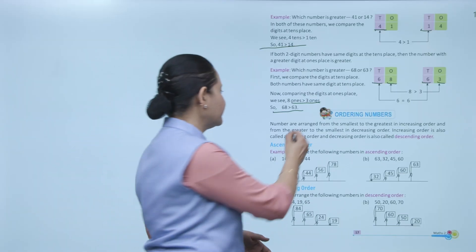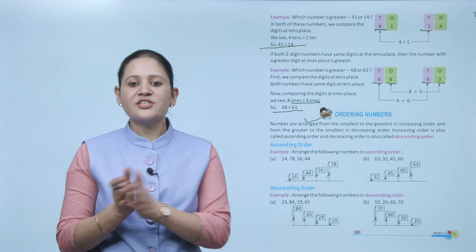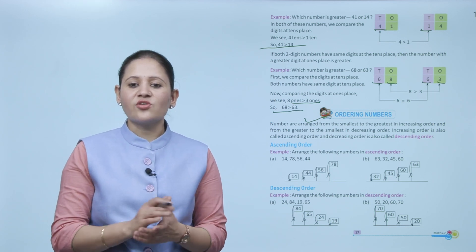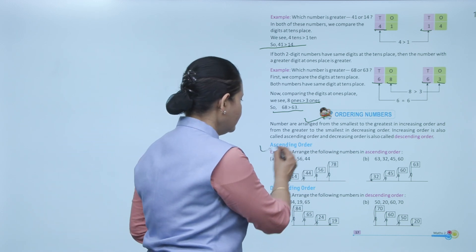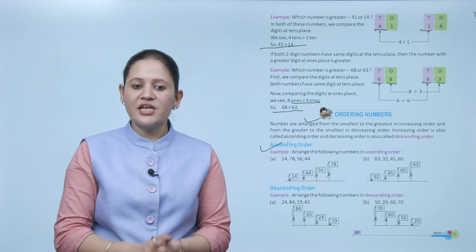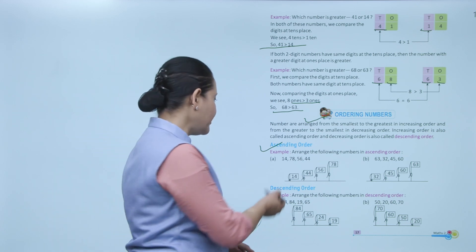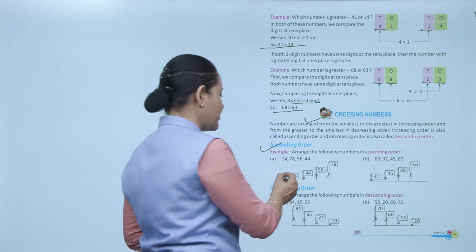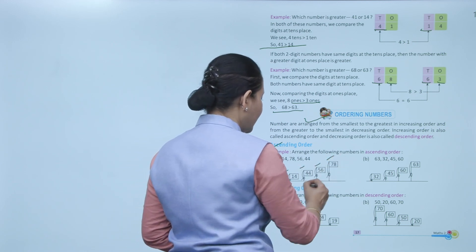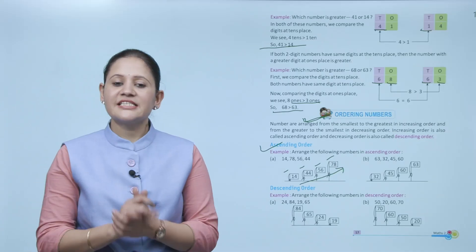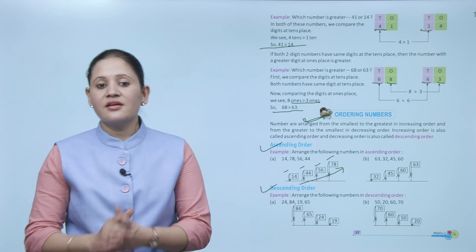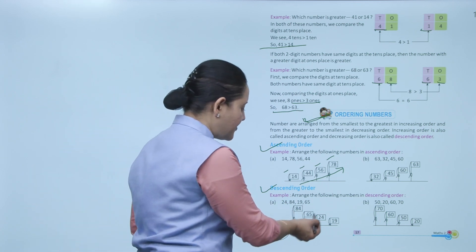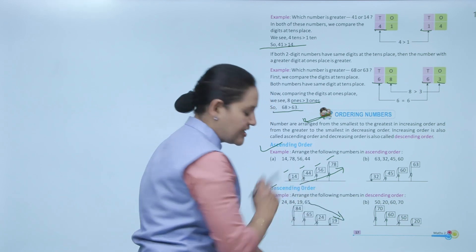Next: ordering numbers. Numbers arranged from smallest to greatest is increasing order. From greatest to smallest is decreasing order. Increasing order is also called ascending order; decreasing order is called descending order. Ascending order example: arrange 14, 78, 56, and 44 in ascending order — smallest to greatest: 14, 44, 56, 78. Descending order example: arrange from greatest to smallest — 84, 65, 24, 19. This is the descending order.